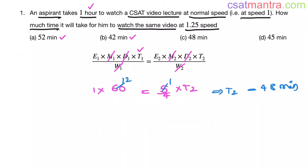So if you watch a 1 hour video at 1.25 speed, then you can complete it in 48 minutes. That means you have saved 12 minutes. In 1 hour you have saved 12 minutes.